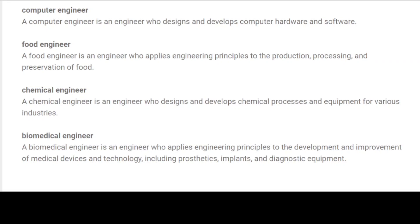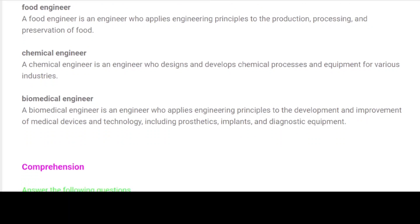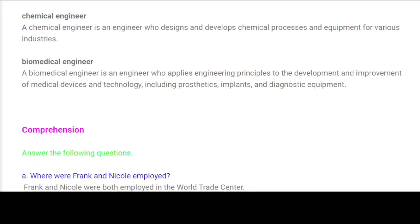Food Engineer: A food engineer is an engineer who applies engineering principles to the production, processing, and preservation of food. Chemical Engineer: A chemical engineer is an engineer who designs and develops chemical processes and equipment for various industries. Biomedical Engineer: A biomedical engineer is an engineer who applies engineering principles to the development and improvement of medical devices and technology, including prosthetics, implants, and diagnostic equipment.